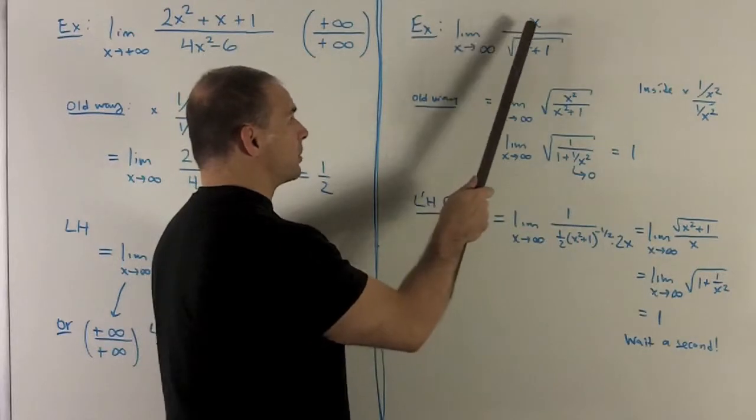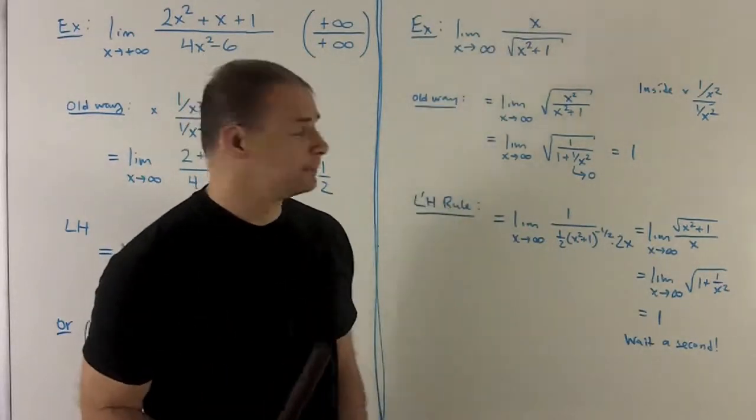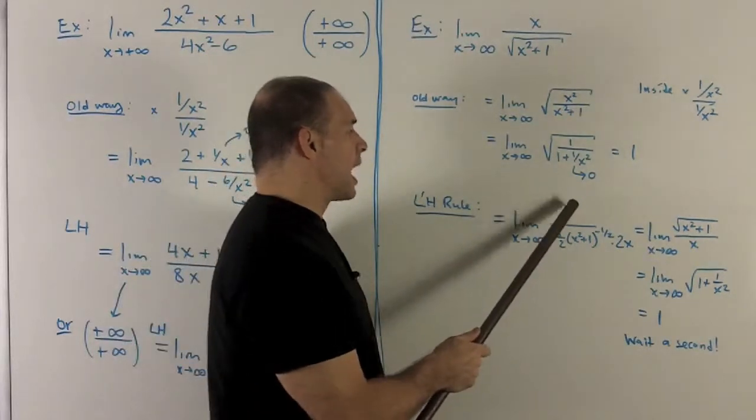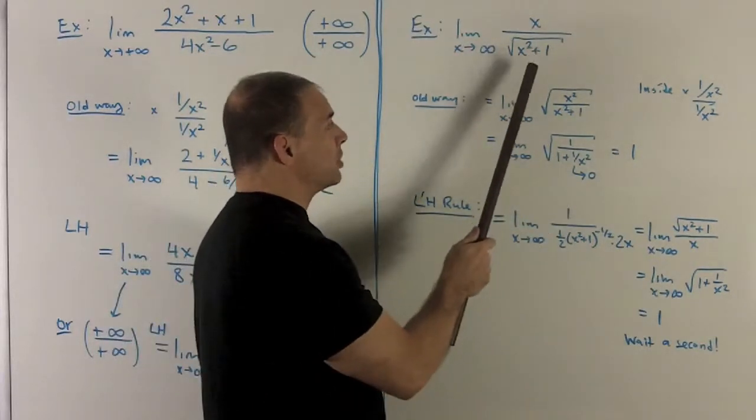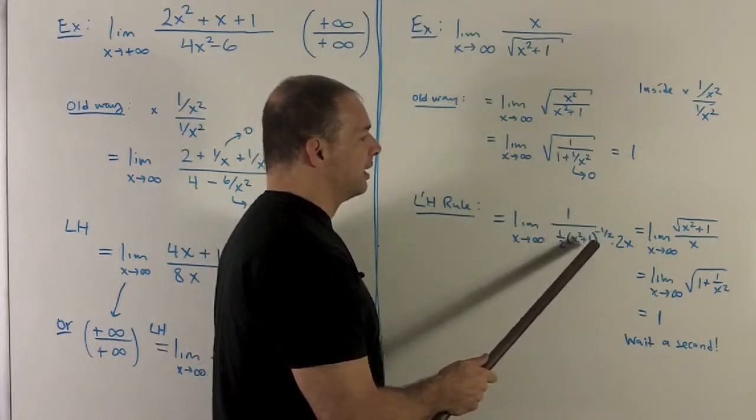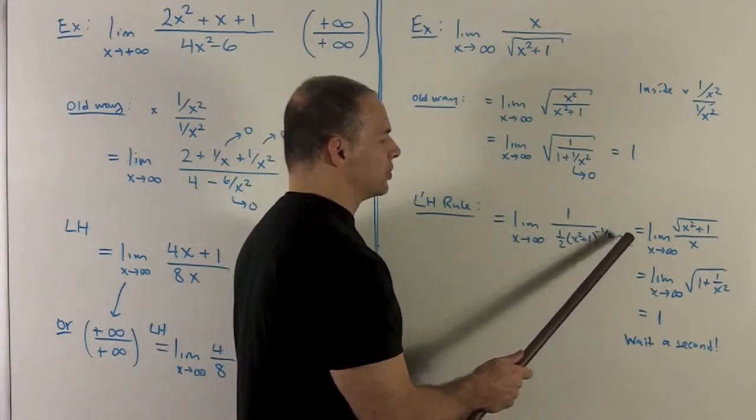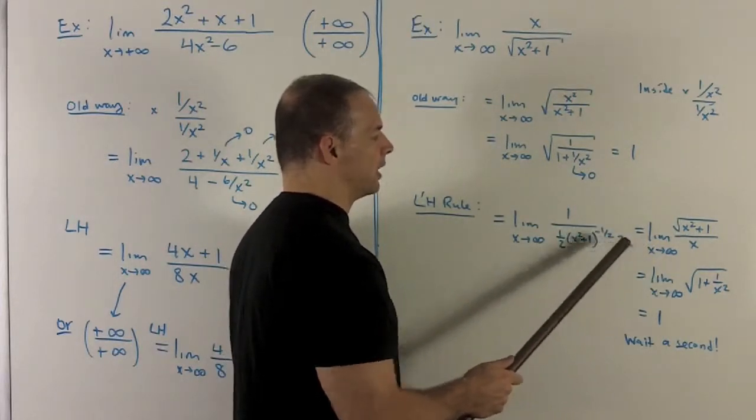If I put the infinity into this, I'm going to have infinity over infinity, so L'Hopital's rule applies. Derivative of the top is 1. The bottom is 1 plus x squared to the 1 half. So I drop the half, leave the inside, exponent becomes minus 1 half, and then times the inside, which is 2x, derivative of the inside.